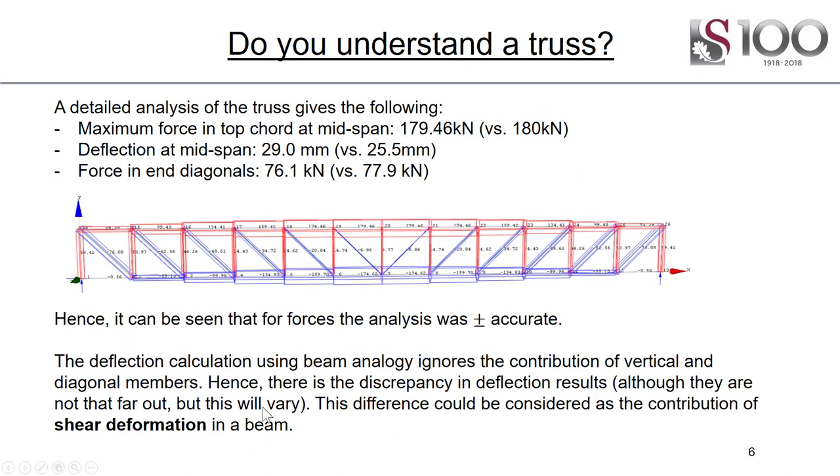Let's compare these to a detailed analysis. If we ran a Prokon analysis of it, we find that the maximum force in the top chord is, give or take the same, 180 kilonewtons. Force in diagonals, more or less the same. Deflection at mid-span, also approximately the same. You can see we had a reasonable approximation, and that gave us a quite quick rough and ready calc.